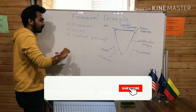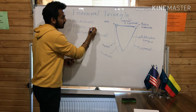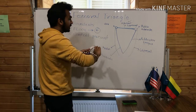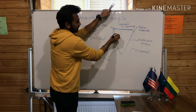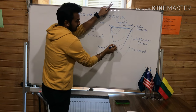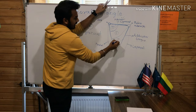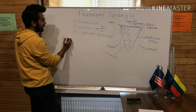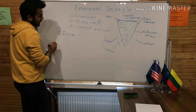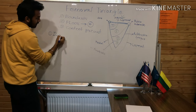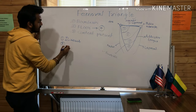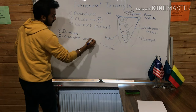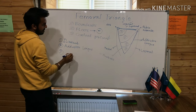Next we are going to cover the floor of the femoral triangle. There are four muscles which are making the floor of the femoral triangle. The first muscle is the iliacus muscle. The second muscle is the adductor longus. The third muscle is the pectineus muscle.